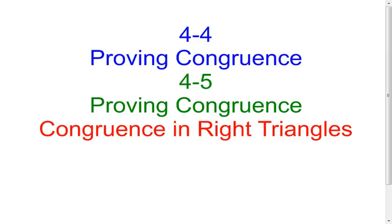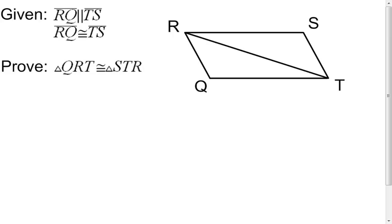In this lesson on proving congruence, I'm just going to look at one example of actually writing a proof. In this proof, I want to prove the two triangles are congruent. I'm given some information and I have this picture. But again, just like every other time that I do a proof, I go back to the five steps of writing a good proof.